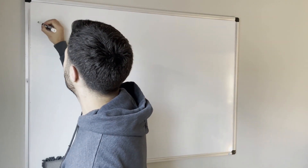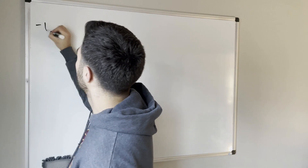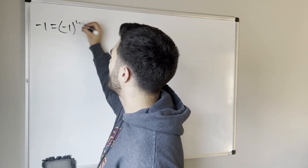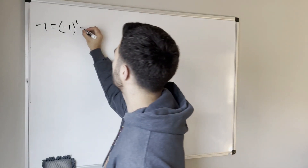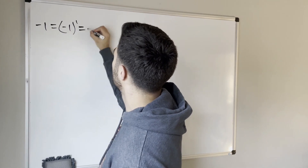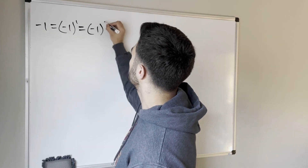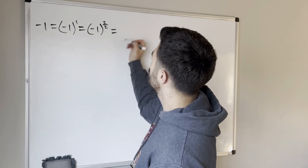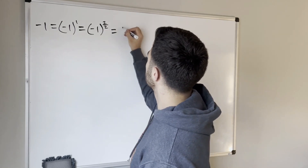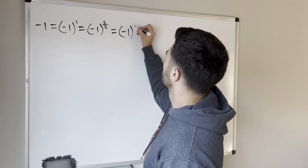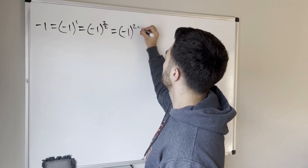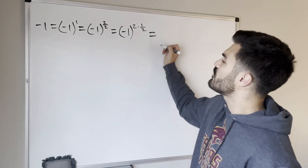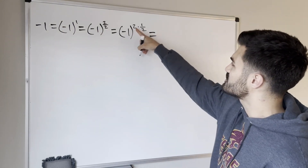Let's go ahead and start with negative 1, which is clearly equal to negative 1 to the first power — anything to the first power is itself. And 1 is clearly equal to 2 over 2, which is the same thing as 2 times one half. Now using our exponent rules we can actually split this up.